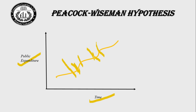In simple words: the Peacock-Weisman Hypothesis states that the government will increase public expenditure with some fluctuations. The reason for the fluctuations is social disturbances — when social disturbances come, the government increases public expenditure to cover them. The increase in public expenditure leads to an increase in tax rates. The excess tax revenue is again used for covering future social disturbances and for the competition between the central government and state governments in performance.